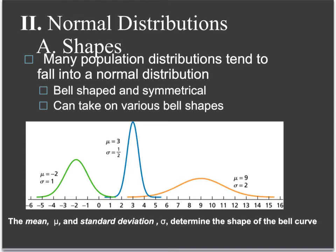Each of those curves has a mean and a standard deviation given for it. It is the mean and the standard deviation which are going to determine the shape of the bell curve, and it is all the information you need to determine the shape of the bell curve if you have a normal distribution.